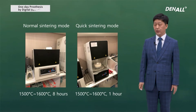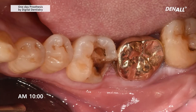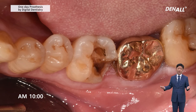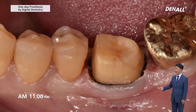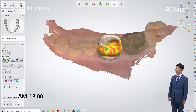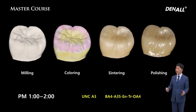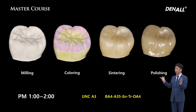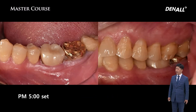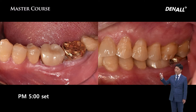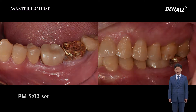The patient comes in at 10 a.m. wanting prosthesis delivered within a day. Prep is done, design is completed, and using the lunch period, milling, coloring, and sintering are completed. In the afternoon, the patient comes back late in the afternoon and the crown is set.